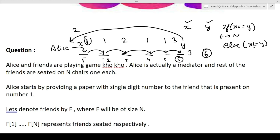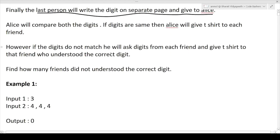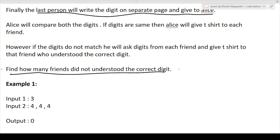Four friends guessed the correct number (one), and two friends guessed the wrong number. So the answer would be two. In the first case where X and Y are equal, all friends guess the correct digit, so the answer is zero — how many friends did not understand the correct digit? Zero, because all friends guessed correctly.